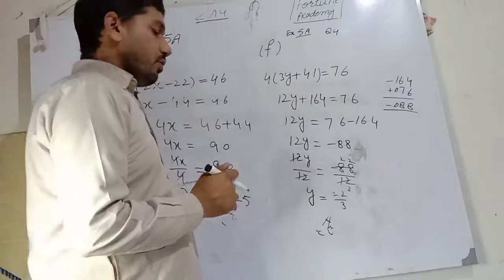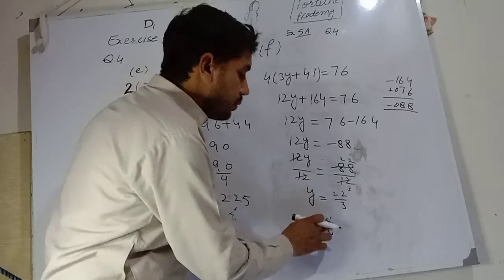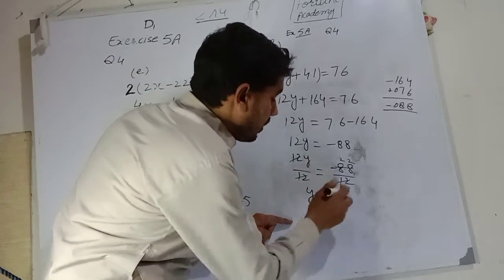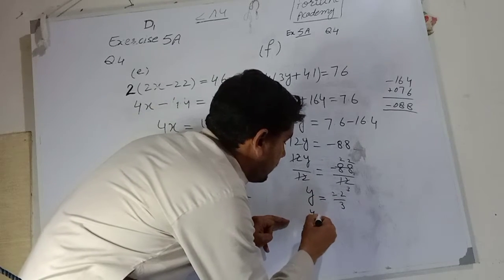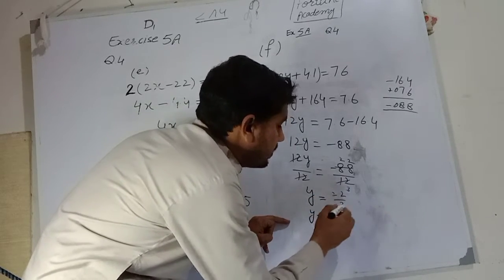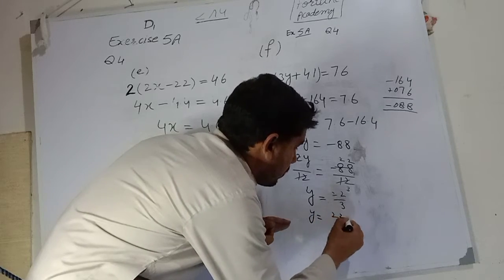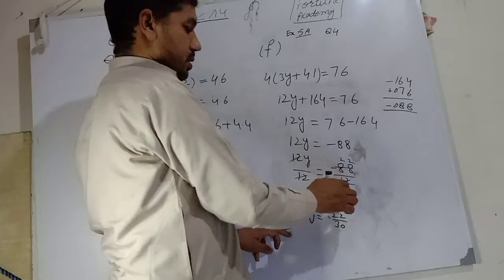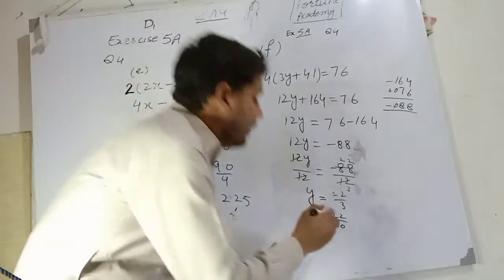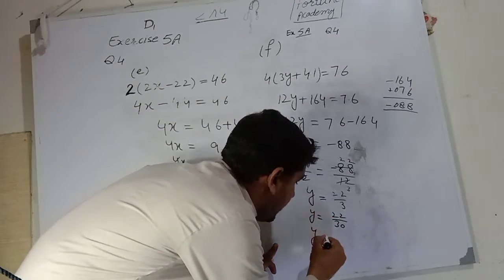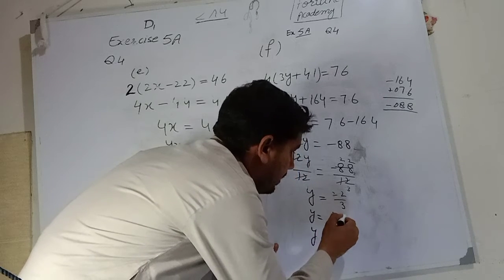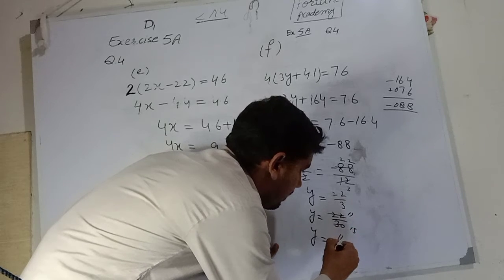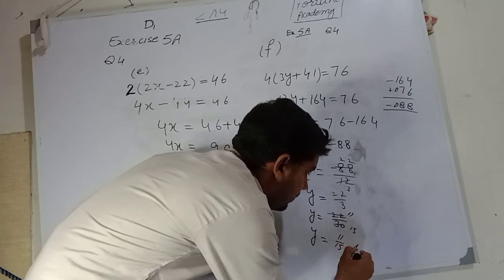This answer is not wrong, but we have to do two more steps. y = 2.2 over 3, which means 22 over 30. So y = 11 over 15. This is your answer.